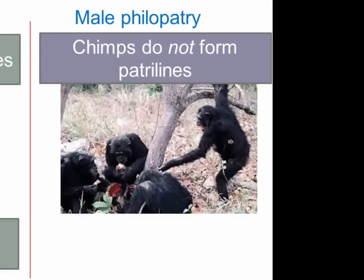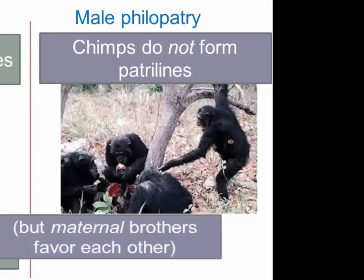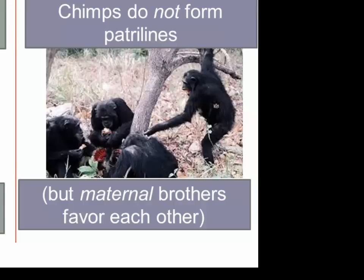Chimpanzees, on the other hand, practice male philopatry but do not form patrilines, probably again because of the difficulty of recognizing relationships through the father. A patriline would be a father and sons, just as matrilines are a mother and her sisters and daughters. Despite not forming patrilines, chimpanzees do favor their maternal brothers — other males who share the same mother — and presumably they know who shares the same mother because they're familiar with them through proximity to the same mother.